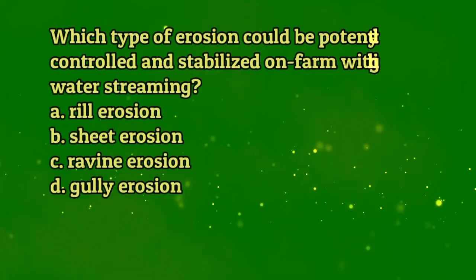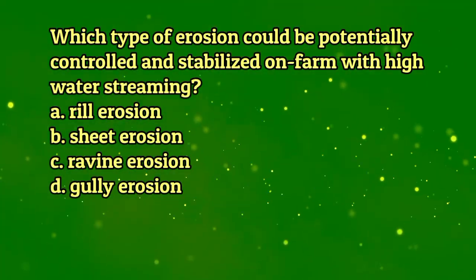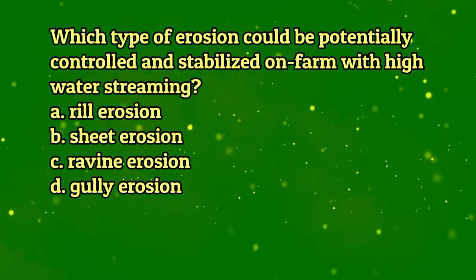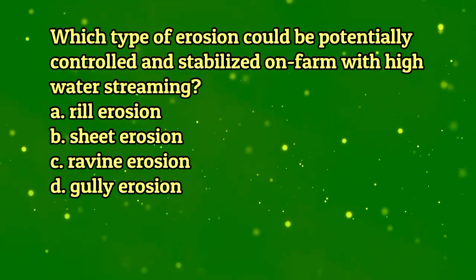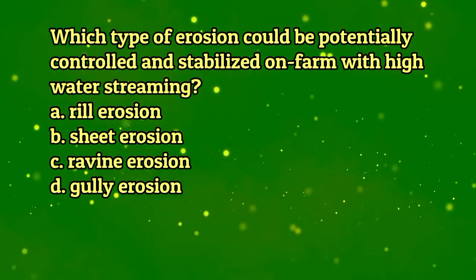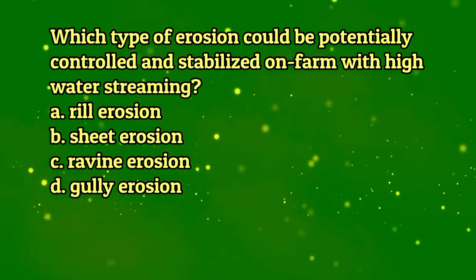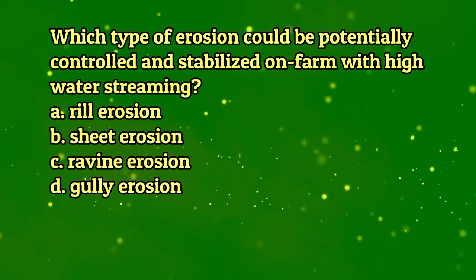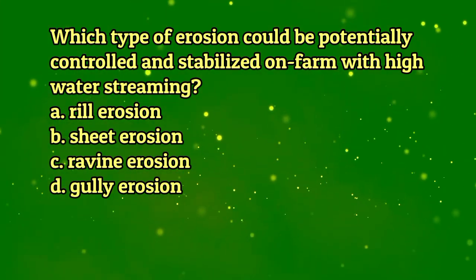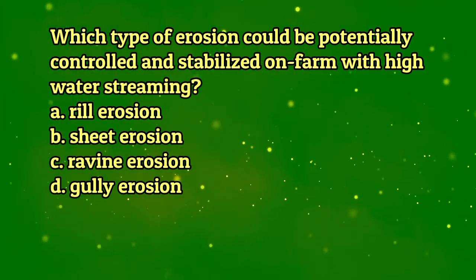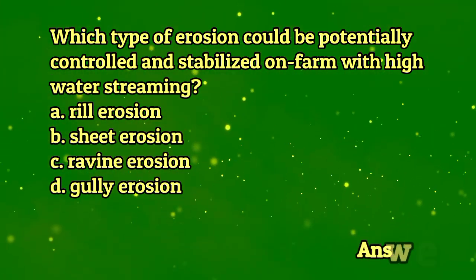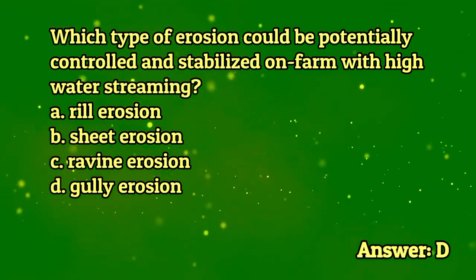Which type of erosion could be potentially controlled and stabilized on a farm with high water streaming? A. Rill erosion. B. Sheet erosion. C. Ravine erosion. D. Gully erosion. The answer is letter D.